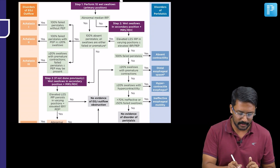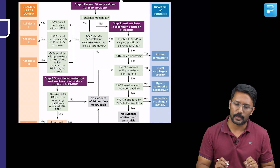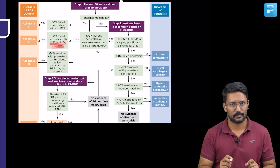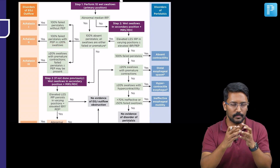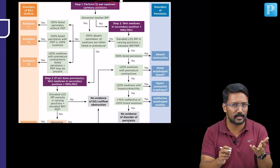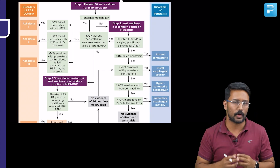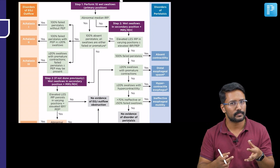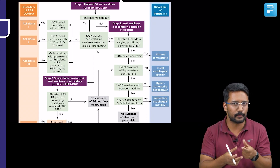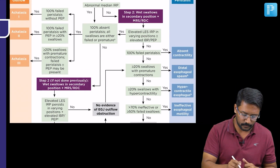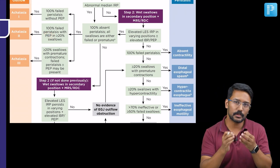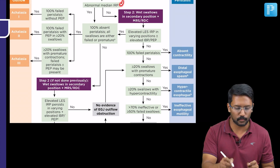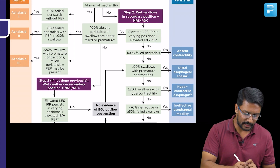In type 2 achalasia, there is also 100% failed peristalsis, but at least 20% of swallows — at least 2 out of 10 — show panesophageal pressurization. The column of water the patient swallows gets stuck between the upper and lower esophageal sphincters, building up pressure throughout the esophagus. This is not esophageal contractions, but a rise in intraesophageal pressure — that is panesophageal pressurization. Combined with elevated median IRP indicating impaired LES relaxation, this is type 2 achalasia.